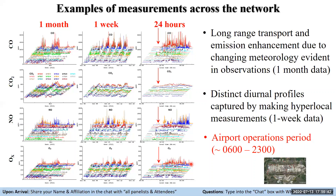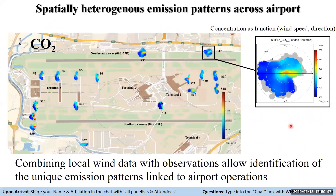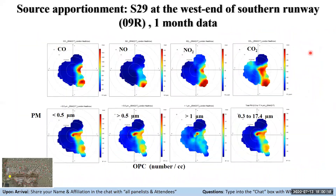Another way of looking at the information content from this network is to couple the concentration measurements as a function of wind speed and wind direction. We've done this for all the different receptor points, and by doing that combination we can begin to identify unique emission patterns linked to airport operation. A good example is at the end of the runway, where we have two emission patterns that are mirror images of each other, linked to the emissions coming from the runway itself.